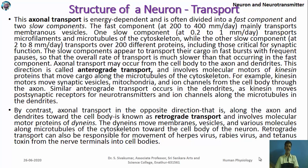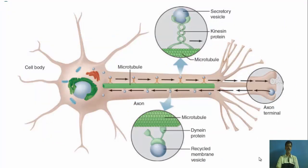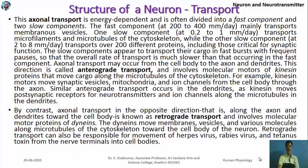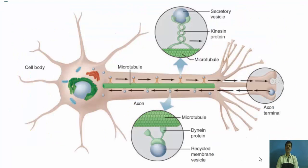Since the axon is very long, transporting materials from the cell body to the axon terminal requires specific mechanisms. Some proteins move very fast, others at 200–400 mm per day, and some as slowly as 0.2–1 mm per day. Transport from the cell body to the axon terminal is called anterograde transport, achieved by the protein kinesin. Transport from the axon terminal back to the cell body is called retrograde transport, achieved by the protein dynein. Both types of transport are necessary during nerve impulse transmission.